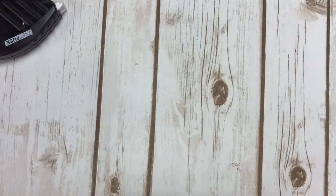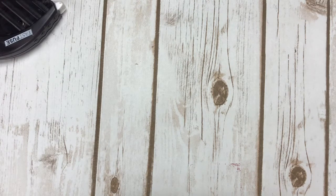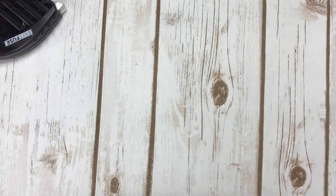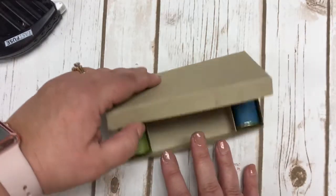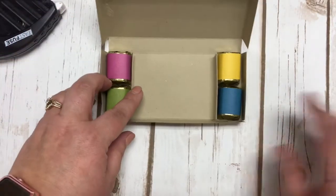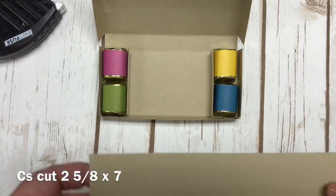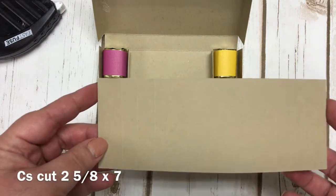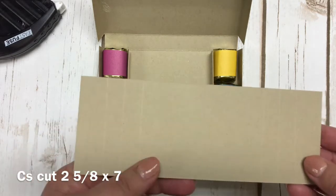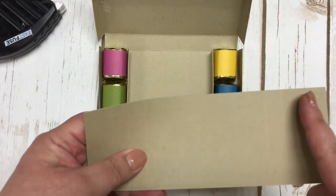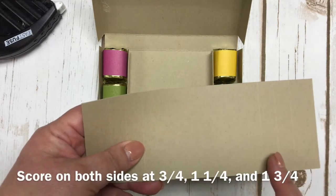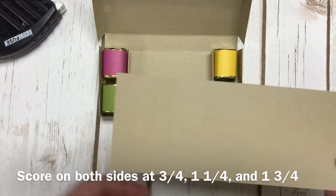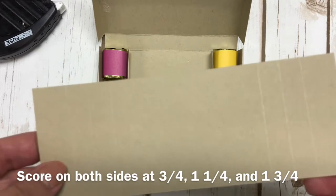From there what you're going to be doing is you need to make a divider sheet for it. Let me bring my box back in—my sample one—and show you the divider. That divider is a piece of cardstock that is cut to 2 5/8 by 7, and you're going to be scoring this on both sides at 3/4 of an inch, 1 1/4, and 1 3/4. I'm doing that on both sides so you can see that I've got score marks there on both sides of that.